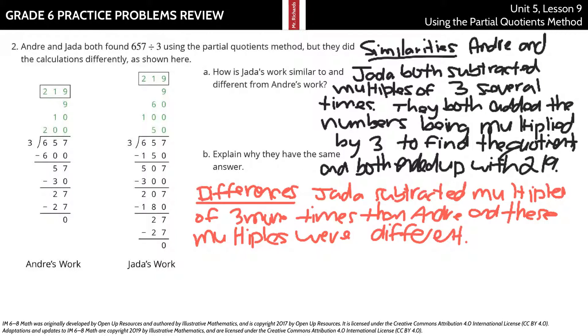As for the differences, Jada subtracted multiples of 3 more times than Andre, and these multiples were different. You had 600 for Andre. There's 150 and 300 and 180 and 27. They both had the 27 there, but the path was much different, where Andre recognized the 200 groups to get 60, 10 to get 30, before ending up with the 9 groups.